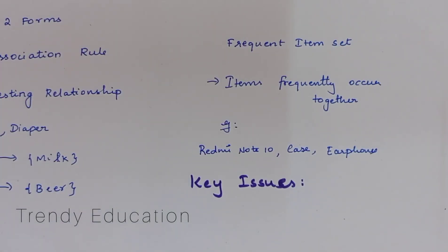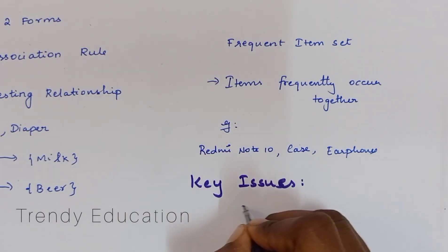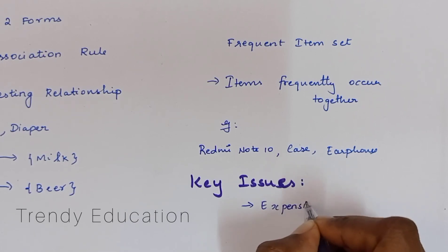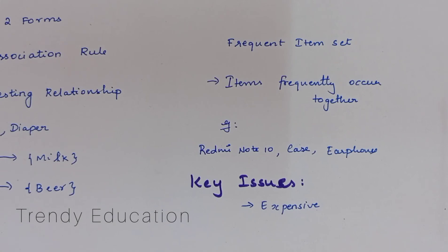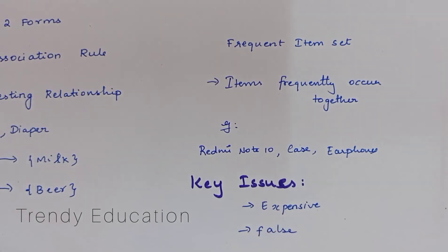Now coming to the key issues of association analysis. There are only two key issues. First, it might be expensive — when analyzing a large amount of data like millions or billions of records, analyzing each and every data point is very expensive and a huge process. Second, sometimes it might be false — the uncovered relationships found by association analysis might be false or fake, and using this algorithm might give a failure result. So these are the two key issues of association analysis.